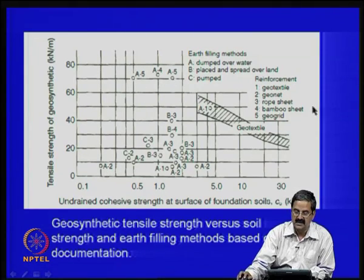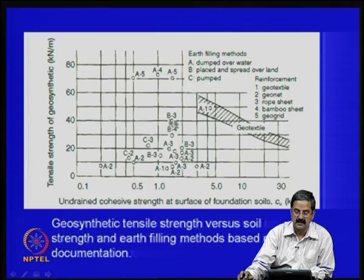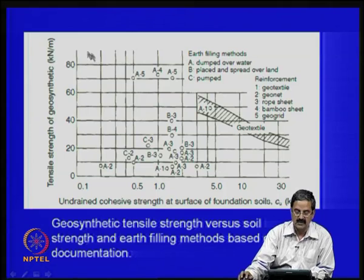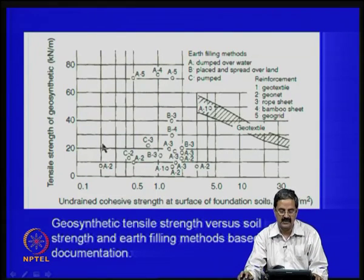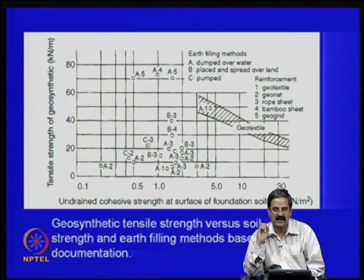For very weak deposits dumped over water, a geotextile is placed and the required tensile strength of the geosynthetic is about 80 to 100 kN/m. Method A5 is dump over water with a geogrid, A4 includes bamboo sheet, A2 is a geonet. Method B involves placing and spreading material over land. Pumping is another technique. These methods are all practiced in Japan and have been used extensively in many soft soil bearing capacity problems.